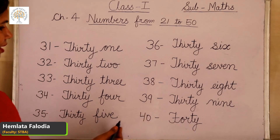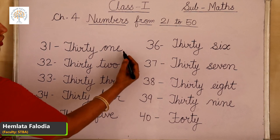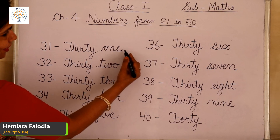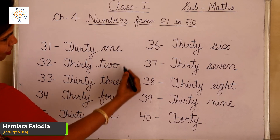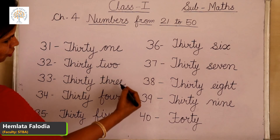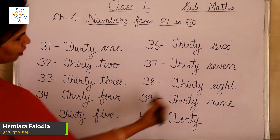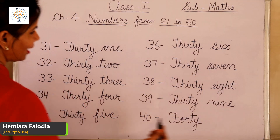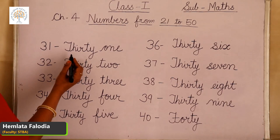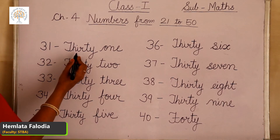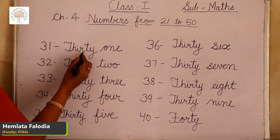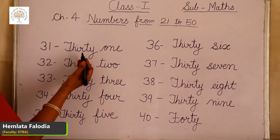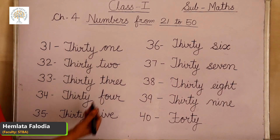This is very easy to learn because we have already done 1 to 10: 1, 2, 3, 4, 5, 6, 7, 8, 9. And you have to learn only the spelling of FORTY. So this will be very easy.